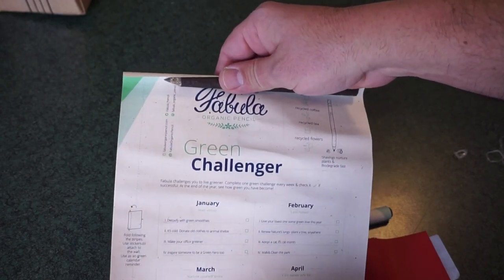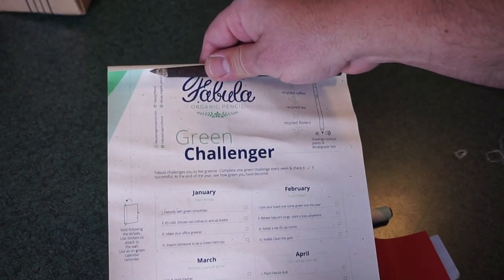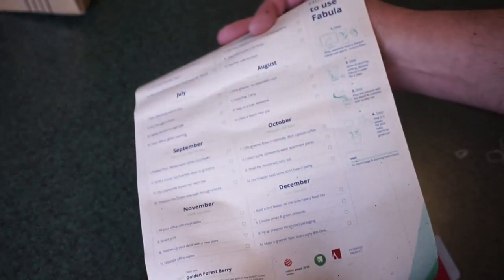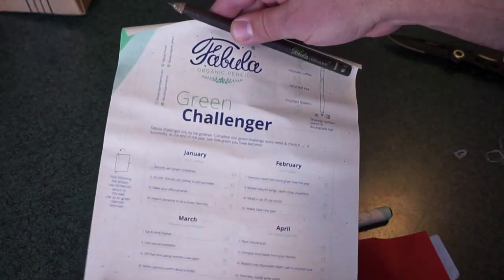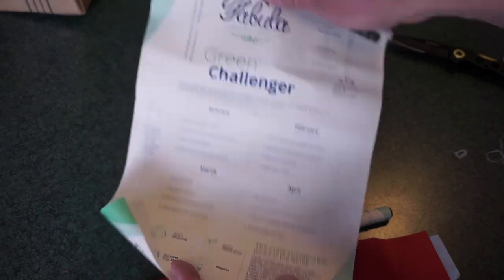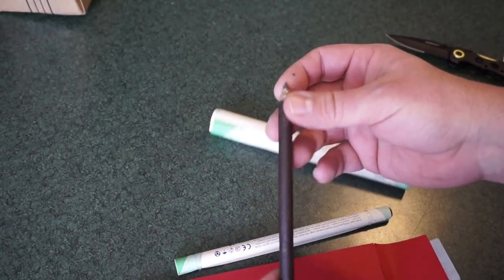So green challenge, you can do something different every month, January, February, March, April. Something for each month of the year, how to use the Fabula. We'll talk about that in a second, because it actually is a little bit more than a pencil and there's instructions on here for you to follow. And that's kind of the surprise.